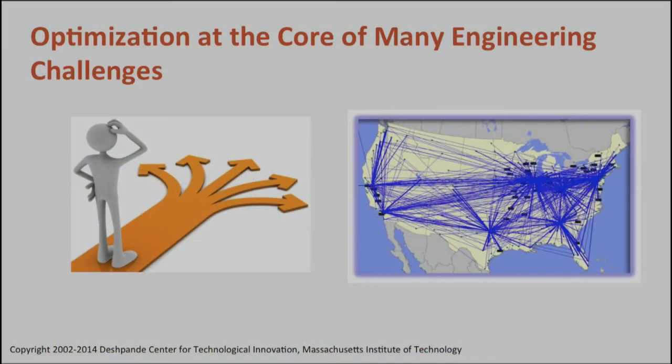As many of you know, optimization is at the core of many engineering challenges. Often, an engineer wants to figure out which one of many options, to achieve a certain goal, does so at the minimum possible cost. An example that you are probably familiar with is the traveling salesman problem. You have a list of cities, you want to visit every city to deliver some load, and you want to do this by covering the least distance so that you use less fuel.